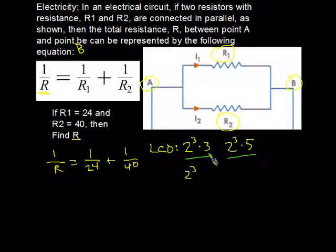So I'll take the most expensive 3 I can find, which is 3 to the first power. And I'll multiply that times my 2 cubed. And then I see a 5 here, but no 5 here. So I'll take my most expensive 5, which is a 5 to the first power. And by shopping for the most expensive item from either store, I get my LCD. And in this case, it's 8 times 15, which gets me 120.